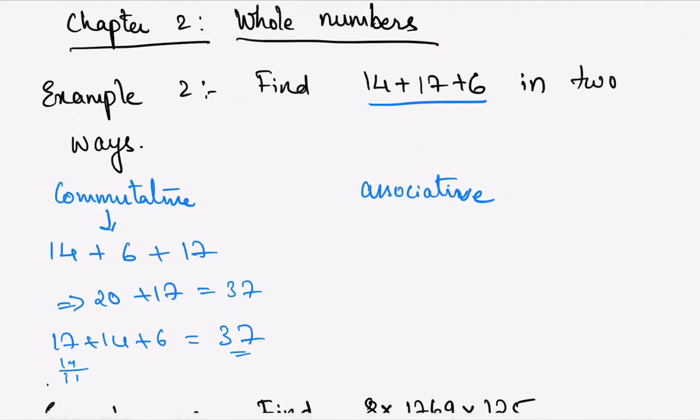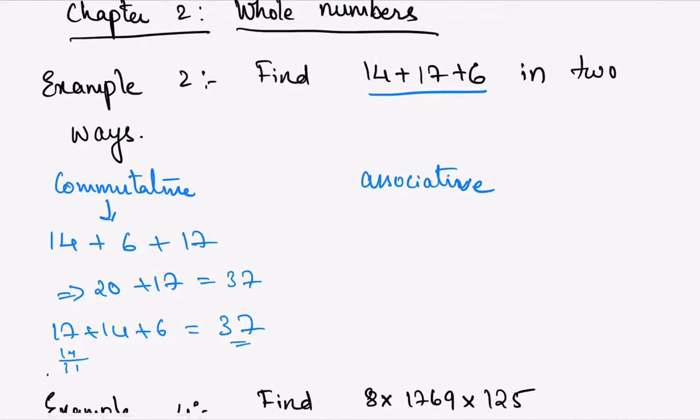Similarly, we can use the associative property. In associative property, we use the concept of brackets—that means we group into associations. Let's see whether (14 + 17) + 6 equals 14 + (17 + 6).